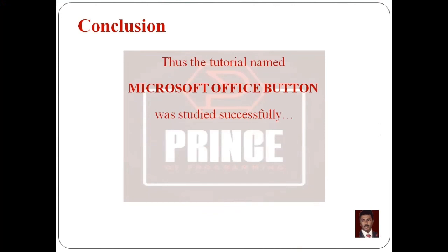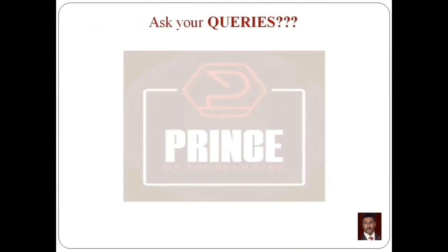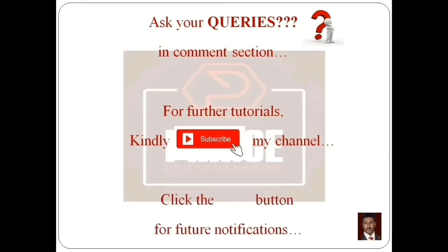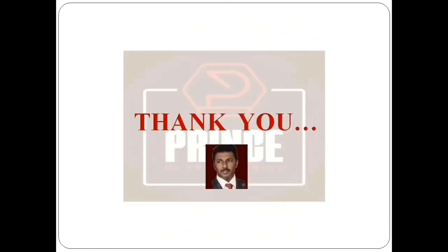In this tutorial, we covered the first component of the Microsoft Word screen: the Office Button. We explored the commands available in the Office Button and their purposes. In the next tutorial, we will look at the Quick Access Toolbar. If you have any doubts, please comment below. Subscribe to my channel, Prints of Programming, and click the bell button for future notifications. Thank you!